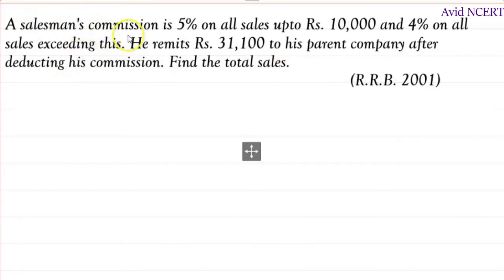From the first sentence we know that commission is 5% on all sales up to rupees 10,000, which is 5 by 100 times 10,000. The zeros cancel, equals 500. This can also be done like this: 10% is 1,000, so 5% is half of this which is 500.